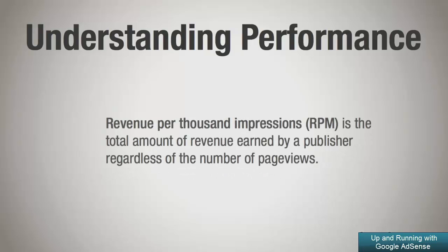Estimated earnings is the total amount of revenue earned by a publisher regardless of the number of page views. As we take a look at the Google AdSense performance reports, we might look at a monthly view of our performance. If we take a look at the estimated earnings in that report, we'll be seeing the estimated earnings for that month. If we take a look at a daily view, we'll only be seeing the estimated earnings for that day, which is important because it's how much money you're earning.